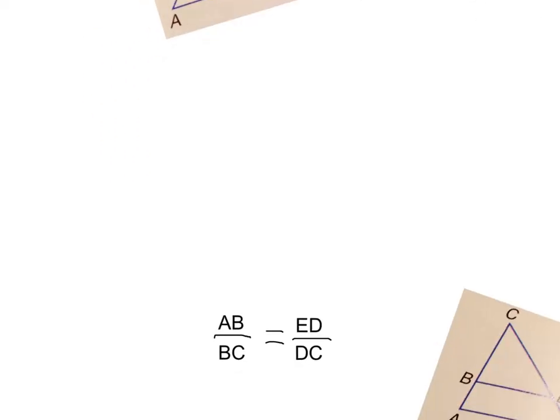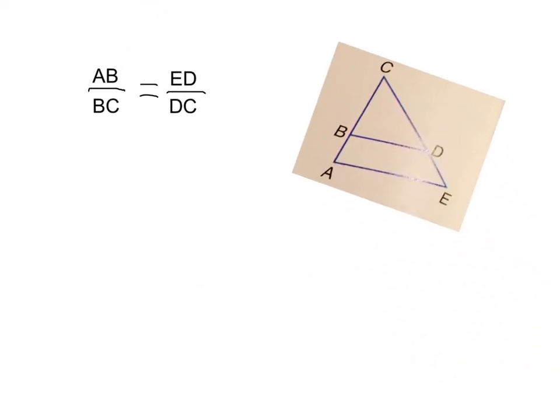But that's not all. Love is a two-way street. If you have two triangles and you're not sure if the lines are parallel, you can check. If AB over BC is equal to ED over DC, then you can conclude that these lines are parallel.